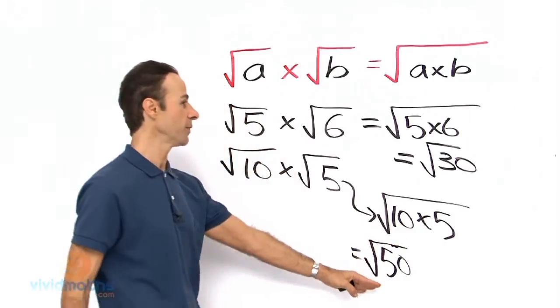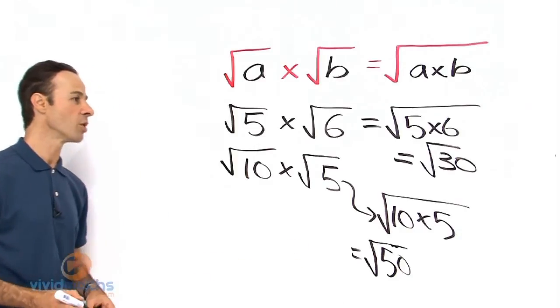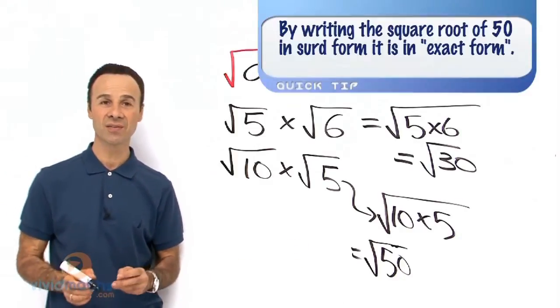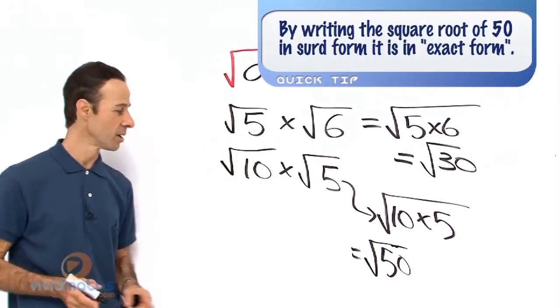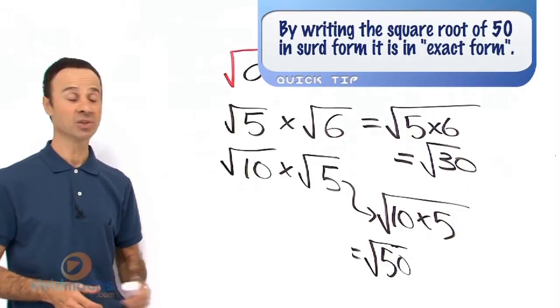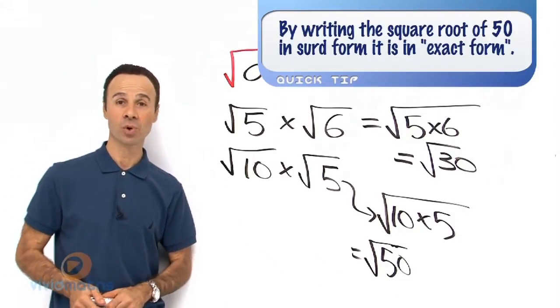Now we know that the square root of 50 is 7.071067812, so we keep it as square root of 50. It is nice and tidy, small and compact.